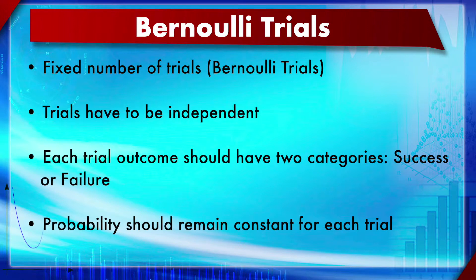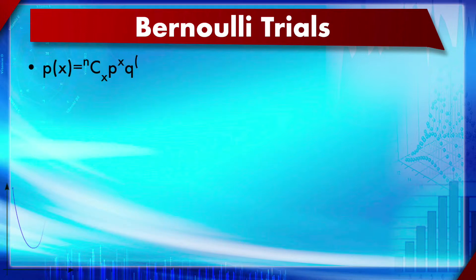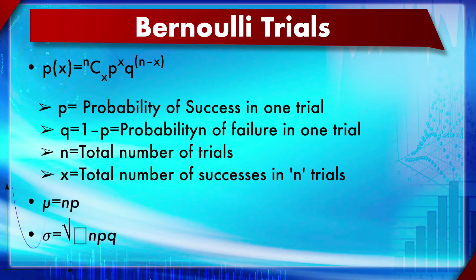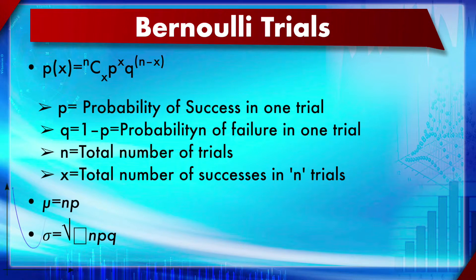The binomial probability equation is: P(x) = nCx multiplied by p^x multiplied by q^(n-x). Here nCx, also written as nCr, is the combination equation. p is the probability of success in one trial, q is 1 minus p (probability of failure in one trial), n is the total number of trials, and x is the total number of successes in n trials. This is the same equation used in the binomial test discussed in the last module.